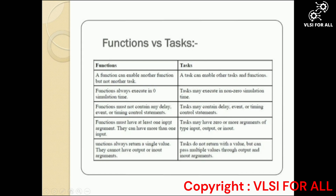The fourth point is that a function must have at least one input argument and can have more than one input. According to the task, a task may have zero or more arguments of type input, output, or inout. The fifth point is that functions always return a single value and cannot have output or inout arguments, but tasks do not return a value and can pass multiple values through output and inout arguments.